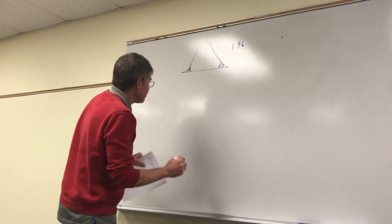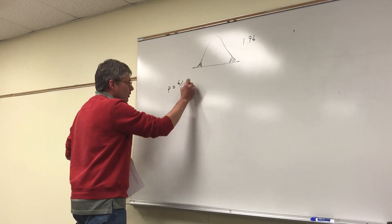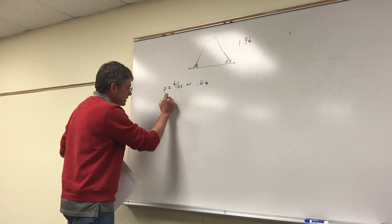Now in this case, my p equals 6 out of 100, or 0.06. My sample size is 100, and I've got the z-score, so all I do is plug and chug the equation.